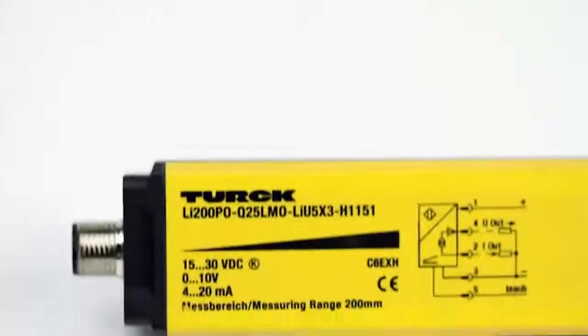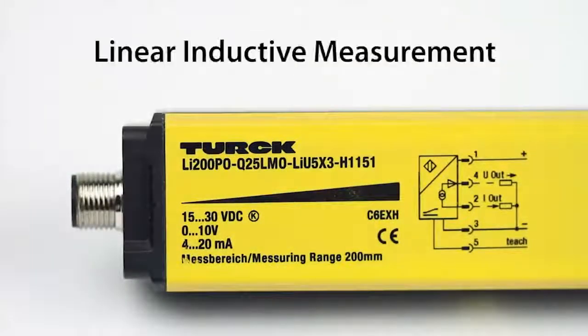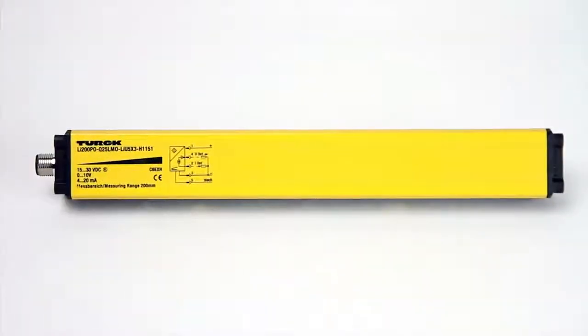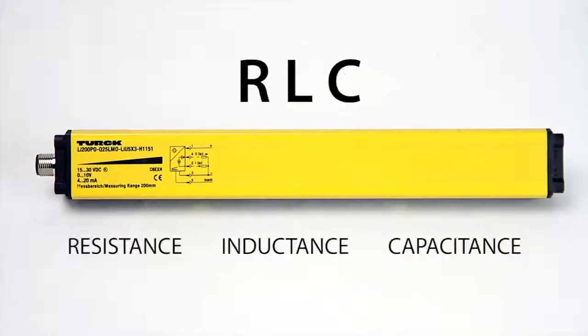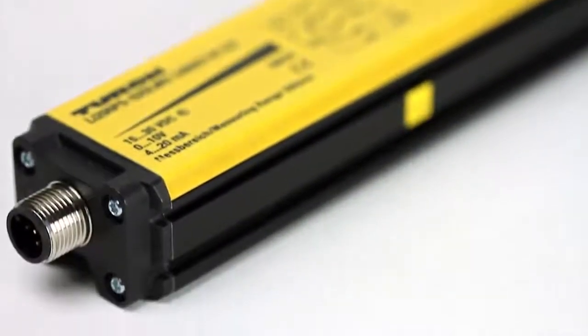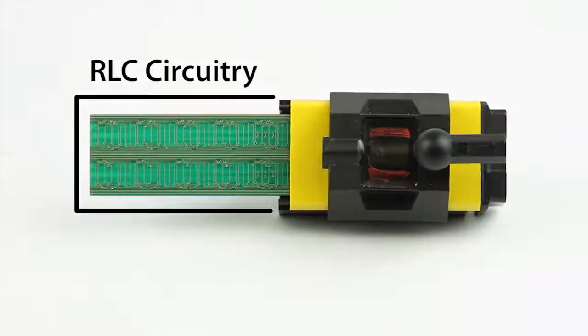A new technology has begun to emerge in this market: linear inductive measurement. One linear inductive measurement technology uses the RLC (resistance, inductance, capacitance) principle to give more accurate and faster position feedback than ever before. This RLC circuitry makes use of emitter and receiver coils on a printed circuit board.